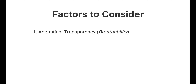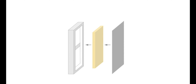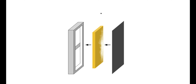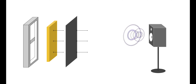The first and most important thing is acoustical transparency, which can simply be referred to as breathability. This parameter explains how well fabric material allows sound to pass through its surface without significantly absorbing or reflecting the sound. The main goal of sound absorption is to allow the core absorption material to do its job as effectively as possible. You must ensure that your absorption panel is wrapped in an acoustically transparent fabric. Sound waves travel through air molecules, and having a loose-weaved, breathable fabric will certainly help the sound move easily through the air molecules.